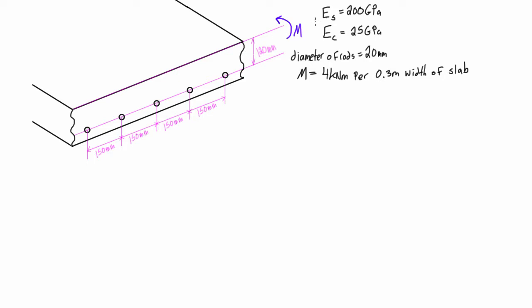This slab could be as wide as we want, which usually leads to confusion. But basically we're just going to break this into a 300 millimeter wide section, analyze it, and the actual width is irrelevant. So don't get hung up on that.